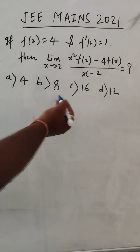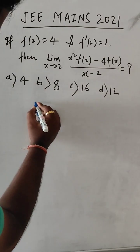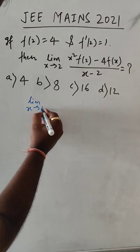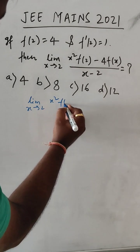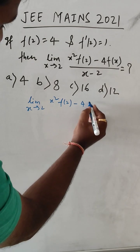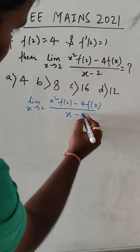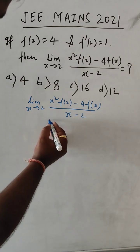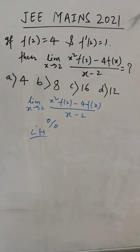Options are given; let's see which option is correct. So we have limit x tends to 2, x² f(2) - 4f(x) divided by (x - 2). If we put the value x = 2, it will become 0/0, so we can use L'Hospital's rule.